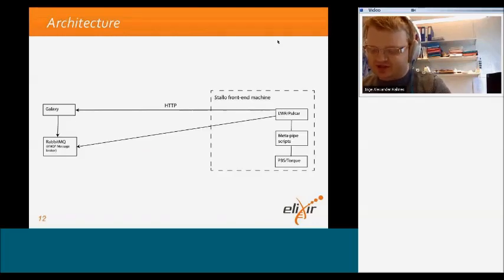This is an overview of the architecture. The arrows in this drawing show the direction of the TCP connections. The Stallo frontend machine is behind a firewall, so it only allows outgoing connections. Because of this, LVR is set up in queue mode and connects to a RabbitMQ message broker on the outside of the firewall. This is where LVR and Galaxy communicate events about new and completed jobs. Galaxy is configured to use LVR whenever the Galaxy tool for MetaPipe is selected.